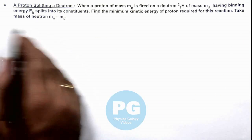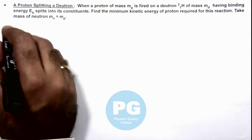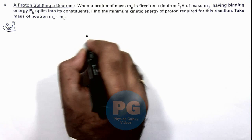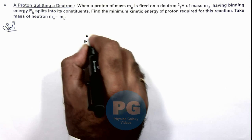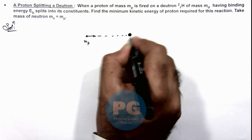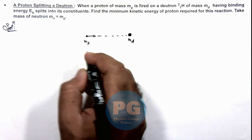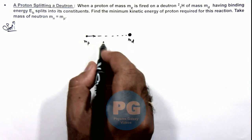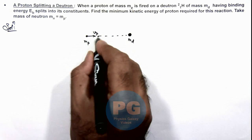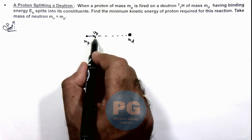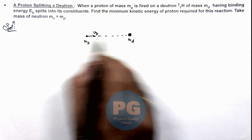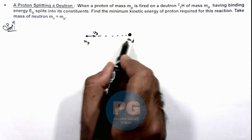We can also take the mass of the proton and neutron to be equal. In this solution, we can see that a proton having mass mp is fired on a deuteron which has mass md. In this collision, when the proton is approaching with speed vp, the maximum possible loss in kinetic energy of the proton will take place when the 2 colliding particles move together.